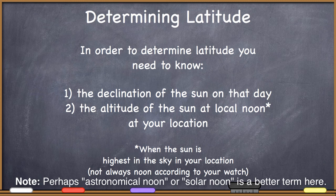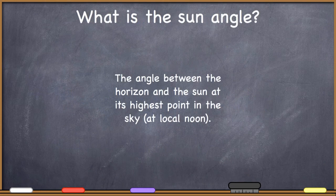When we're talking about finding the altitude of the sun at local noon at your location, we mean at whatever time it is that you look up into the sky and the sun is at its highest point — that's local noon for you. The sun angle is simply the angle between the horizon and the sun at its highest point in the sky at local noon. This sun angle can be determined simply with a protractor, and protractors have been around for thousands of years.